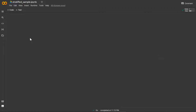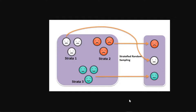Hello everybody. Today I'm going to be performing a stratified random sample on our student performance data set, which should be linked down below. Basically what we're going to be doing is we're going to be taking the data frame, and in the data frame there's a column called race/ethnicity.